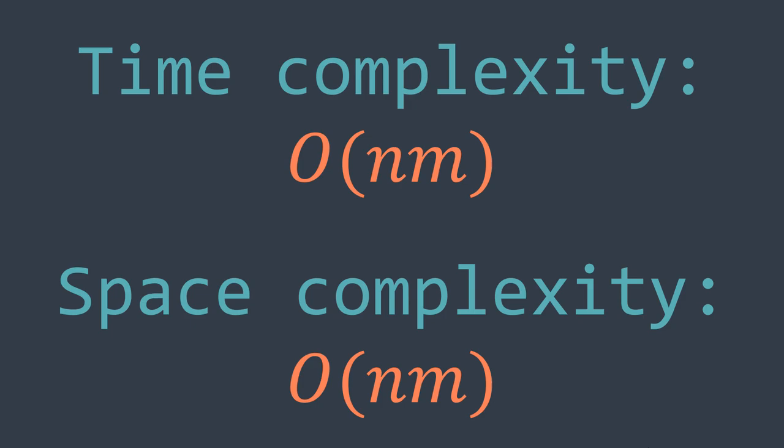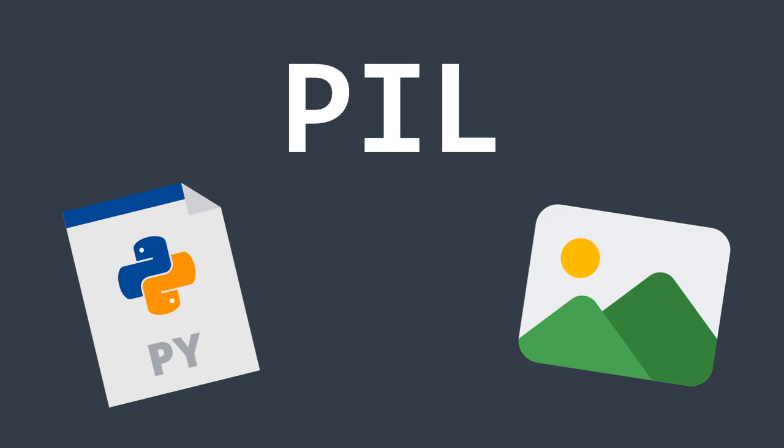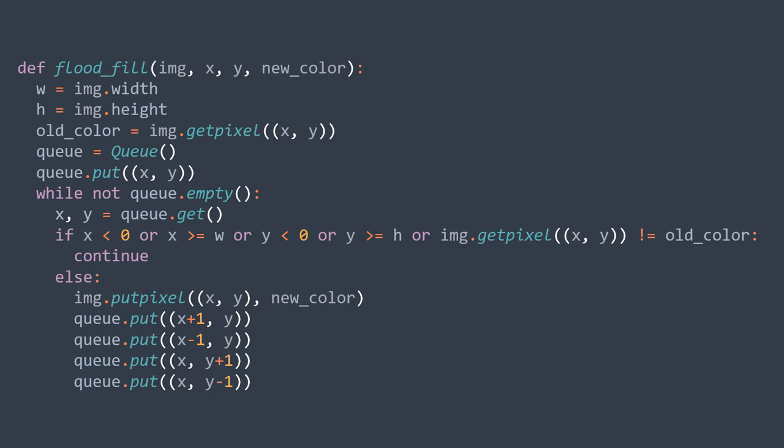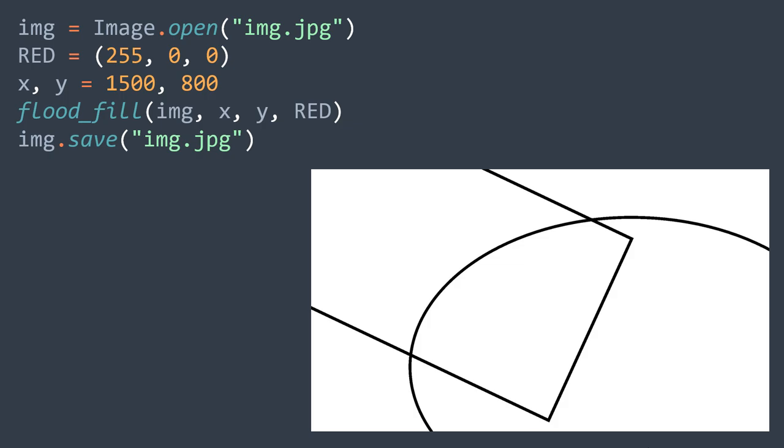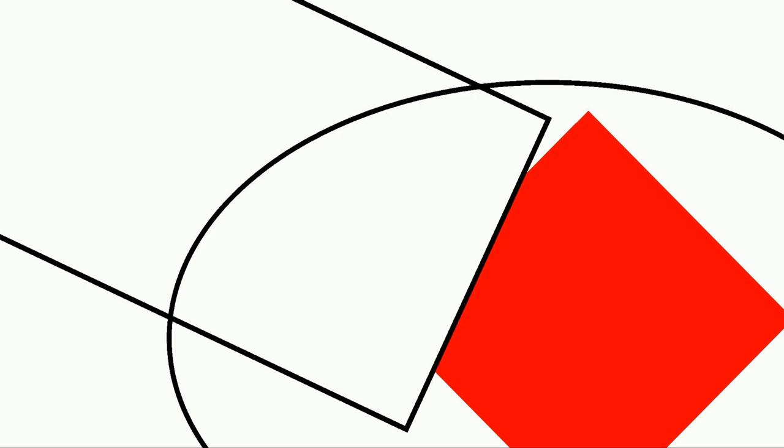Now that we've seen how the Flood Fill algorithm works, let's apply it to images. We'll work with the PIL Python module, which allows us to open images and get and set the color of a pixel. For the Flood Fill algorithm, we just change a few things: the grid becomes the image, i and g become y and x respectively, the dimensions N and M become the height and width of the image, and we read and write pixel color using getPixel and putPixel methods. In the main function, we open the image, select the new color (red for example), select the starting pixel at position (1500, 800), call the function — and you can see that all the white area got filled with red, which is what we wanted.